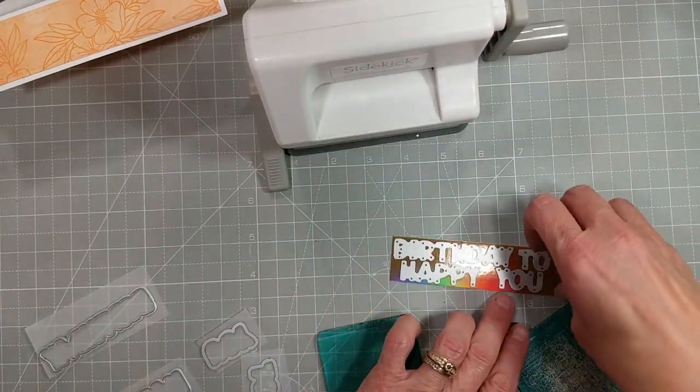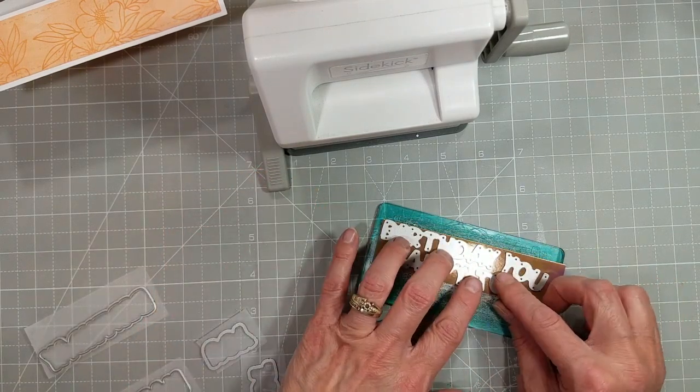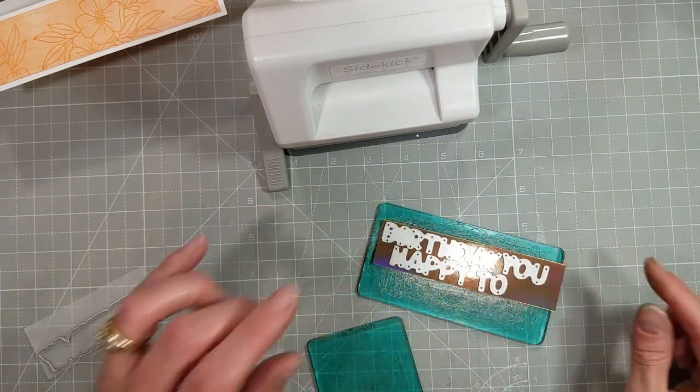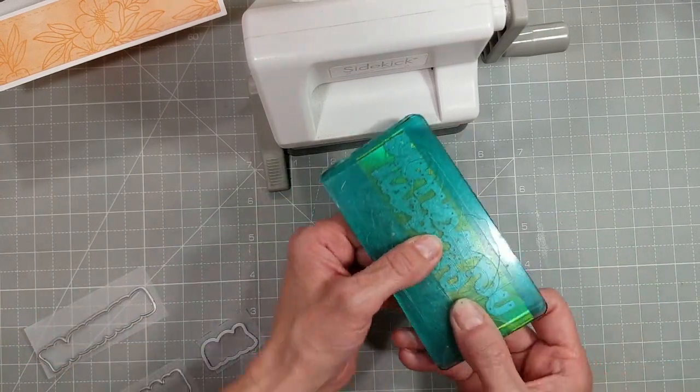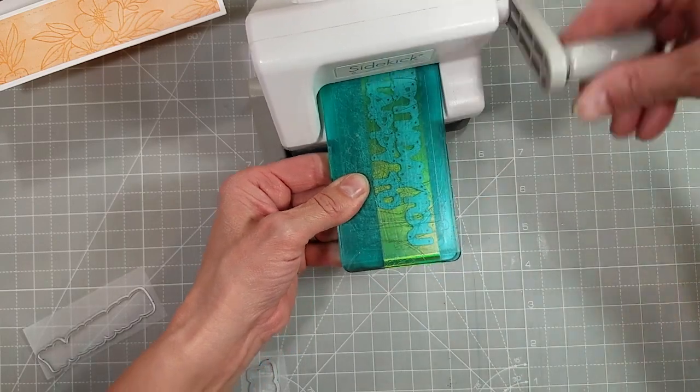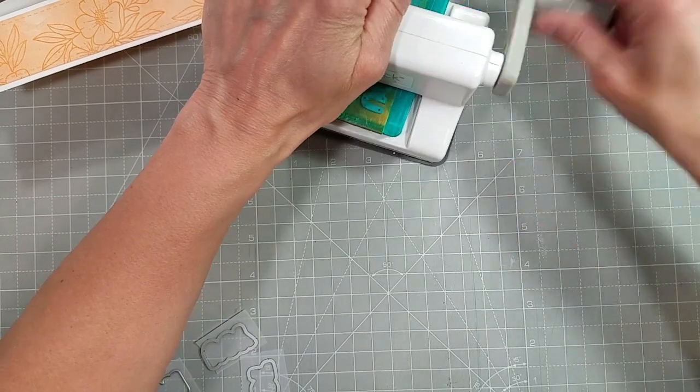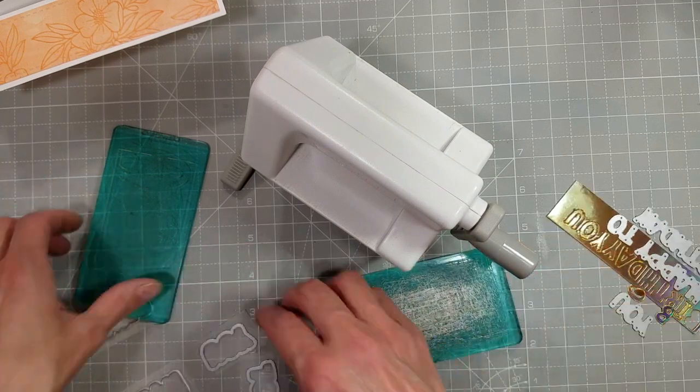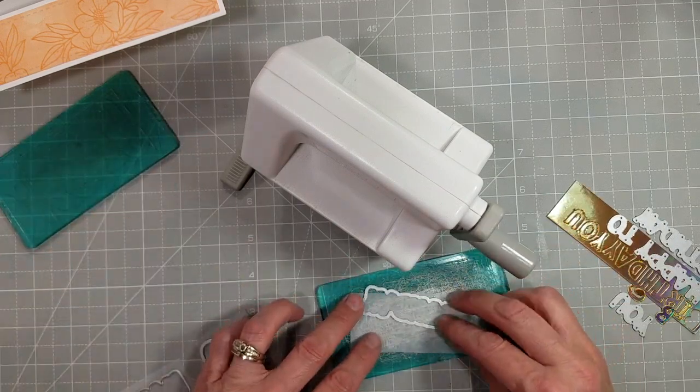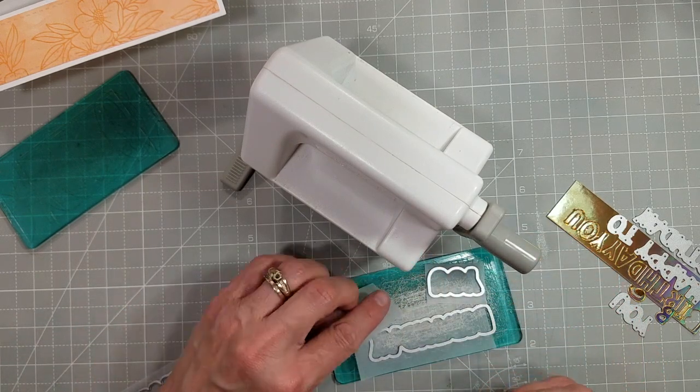Now we're going to move on to the Celebration Border Slimline Celebration Border die set, which has these wonderful words and the bubble cuts for them. I lined up all of the words for happy birthday to you, and I am using a piece of Inca Gold Tonic Mirror card. This is an iridescent gold. I love that it has a rainbow of colors. Then I'm taking some vellum strips that I've cut down and I'm going to cut out the bubble cuts.